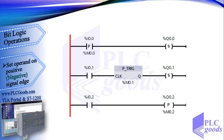Now for a short review of the instructions covered in this video. In each line of this program, an instruction sensitive to a positive edge signal is used. The first instruction is sensitive to a zero-to-one change in I0.0. When the value of that address changes from 0 to 1, this instruction generates a pulse at its output. A set instruction is typically used to latch the state, so Q0.0 remains on. If a simple assignment is used instead, Q0.0 will be on for only one program cycle — about 5 ms.